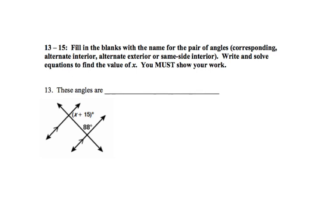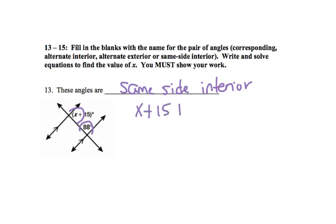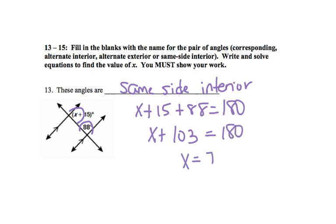I'll start off by doing number 13. We need to fill in the blanks with the angle name — corresponding, alternate interior, alternate exterior, or same side interior — then solve for x. X plus 15 and 88 are same side interior angles, so we set them equal to 180 degrees. X plus 15 plus 88 equals 180. Combining like terms: x plus 103 equals 180. Subtract 103 from both sides, and x equals 77.